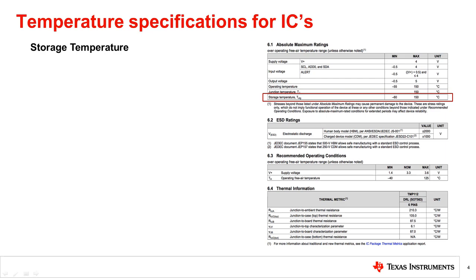The next temperature specification is the absolute maximum rating. This is the maximum operating temperature a device may see without any irrecoverable changes. This is specified when the device is powered and active.